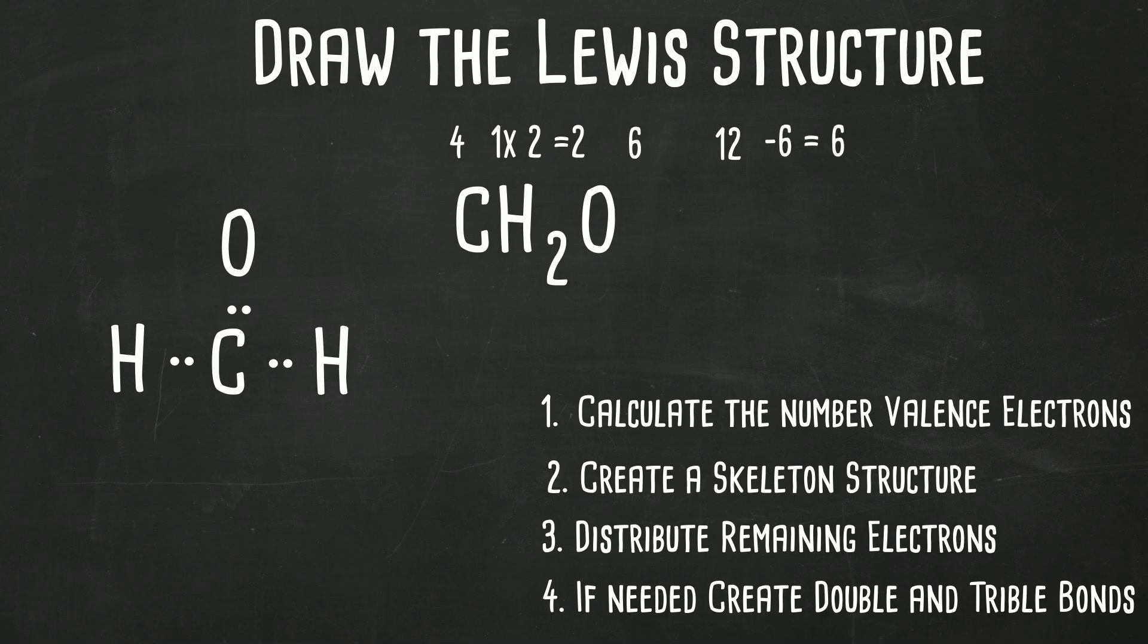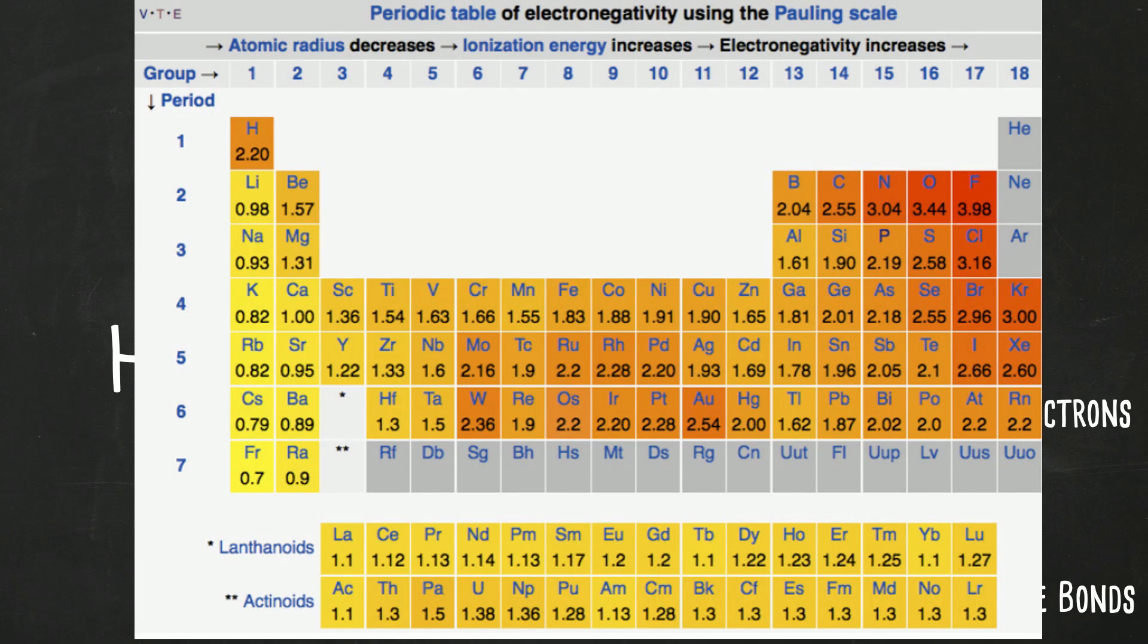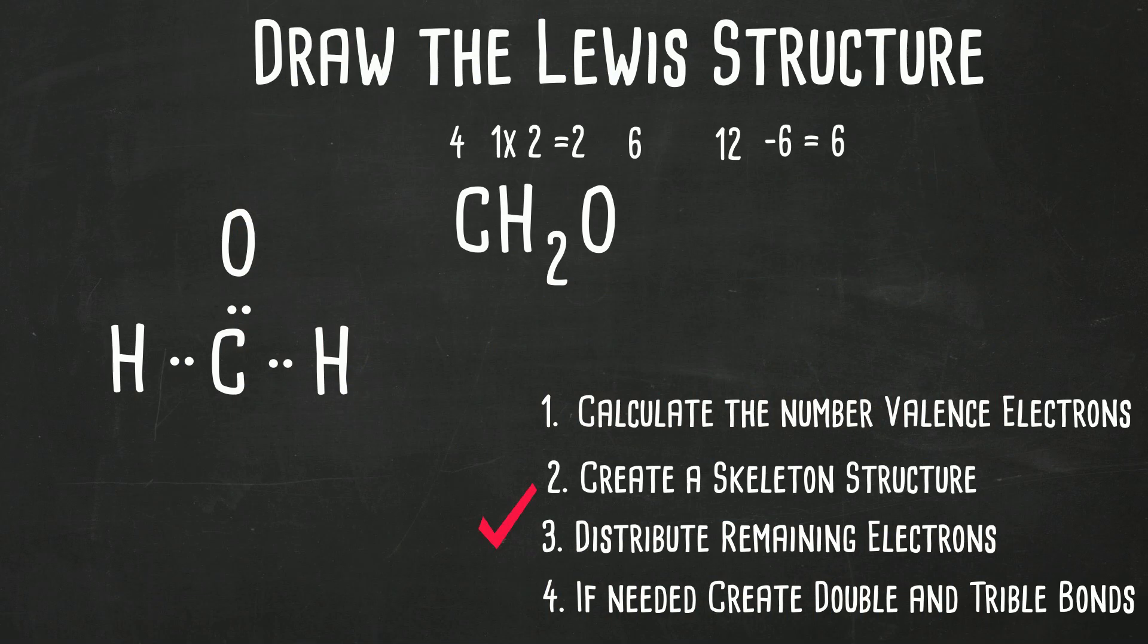Now, let's go ahead and place some electrons around the element with the greatest electronegativity, which is oxygen. Remember, you can check the chart. So oxygen is greater than carbon. So let's place some electrons, two, four, six. That gets us down to zero.